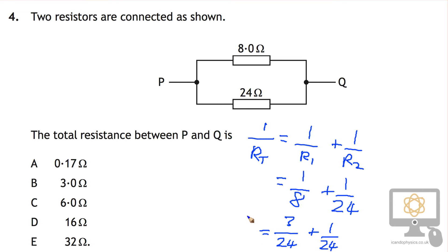And that's equal to, as we had earlier, 1 over RT. So what's that going to give us? Well 3 over 24 and 1 over 24 is 4 over 24. So 1 over RT is equal to 4 over 24.